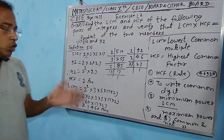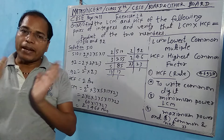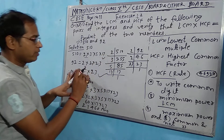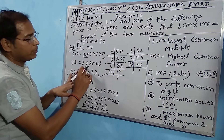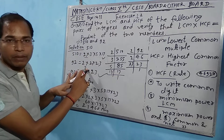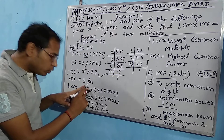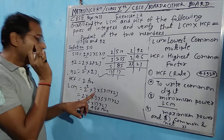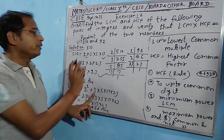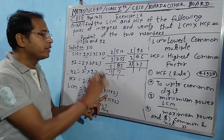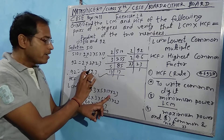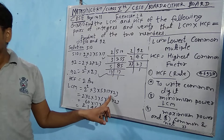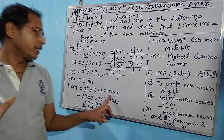For LCM: the rule is to take the maximum power of common factors, and also include factors that appear in only one of the numbers. 2 is common with maximum power 2. Then 3, 5, and 17 from 510 are not in 92, so we include them. 23 from 92 is not in 510, so we also include 23.